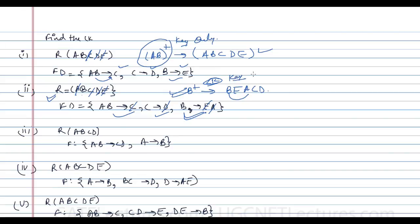B is also a super key. We cannot have more than one candidate key here, because if we try to add any other attribute to B, it becomes a super key and is no longer a candidate key. Whenever I say 'key', I mean candidate key.